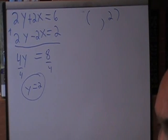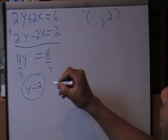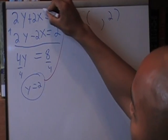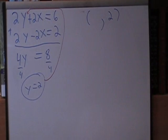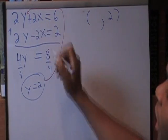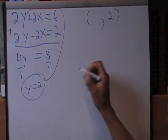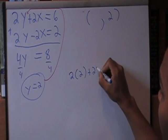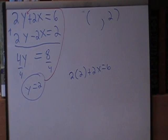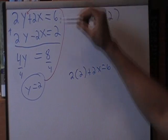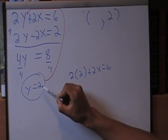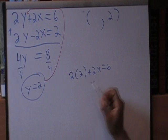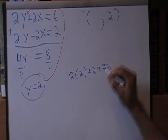What we're going to do now is back substitute y equals 2 into our first equation. Instead of 2y, it's going to be 2 times 2 plus 2x equals 6. We substituted in y equals 2 for y, rewrote the equation, and now we're going to solve for x.